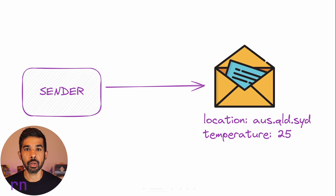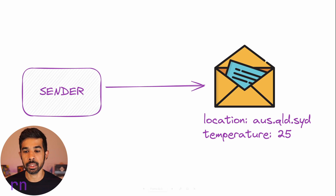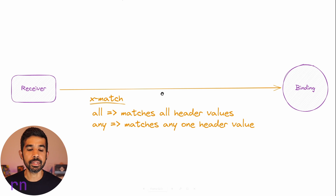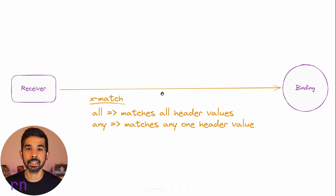In RabbitMQ, the sender directly sends messages to the exchange and does not know anything about the queues or bindings. In the headers exchange, when a message is sent, it populates headers on the message — in this case two attributes: location and temperature with appropriate values. On the receiver side, it sets up the binding to match messages into different queues, and also sets up the x-match header.